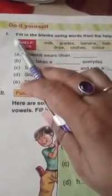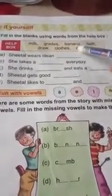Now we are going to discuss the exercise of chapter number 1, Sheetal. Coming to question number 1. Fill in the blanks using words from the help box. Here, help box is given. Few words are here and you have to choose the appropriate word to fill the blanks.